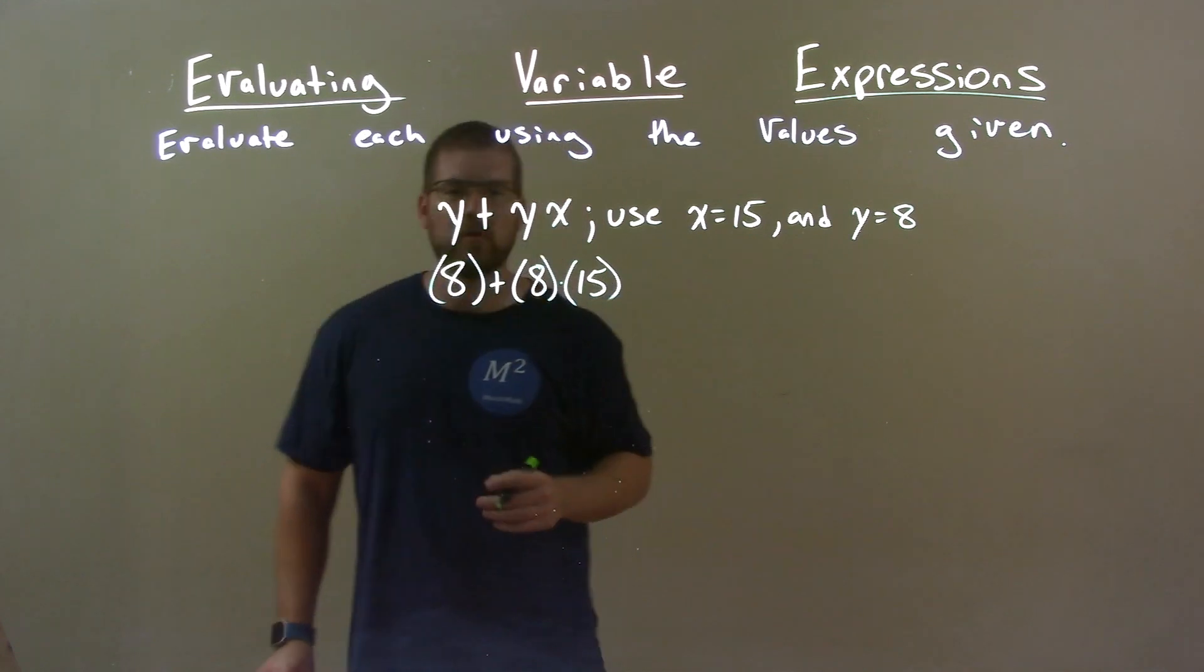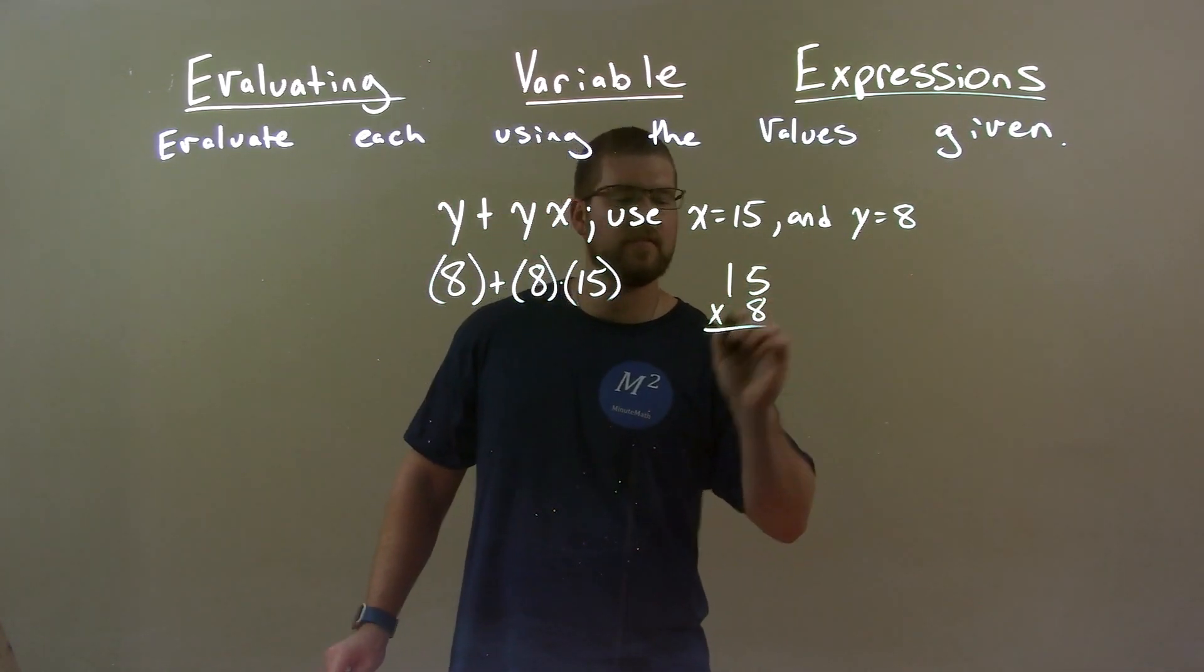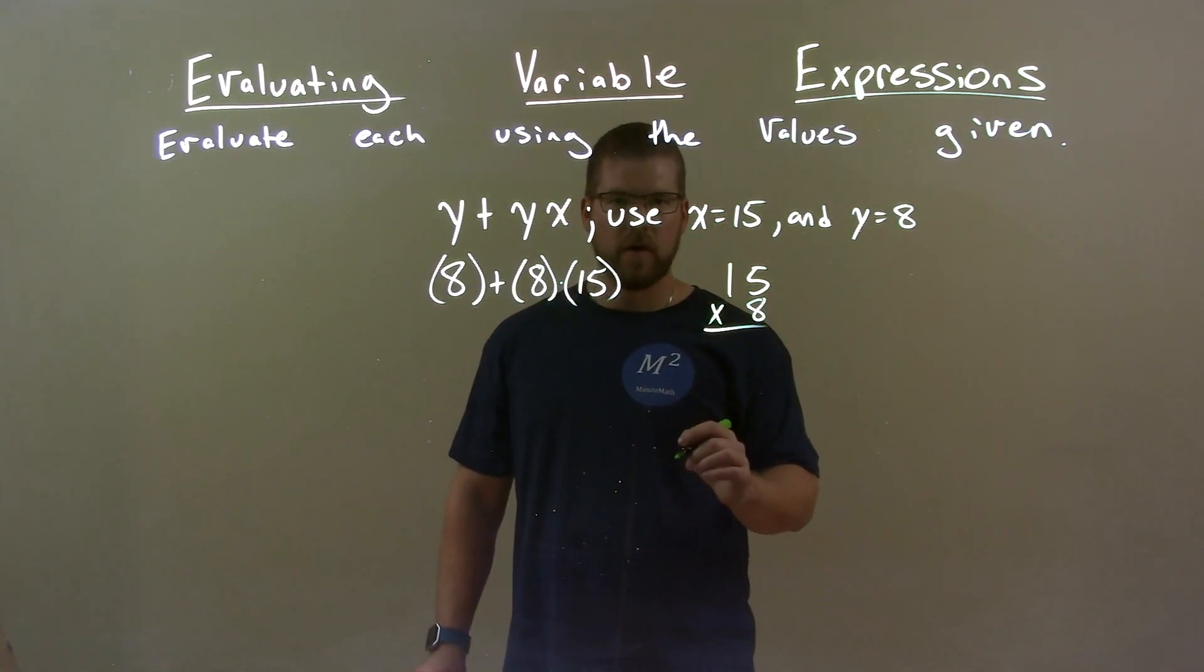Order of operations says multiplication is first, 8 times 15. So let's do it on the side here, 15 times 8. 8 times 5 is 40.